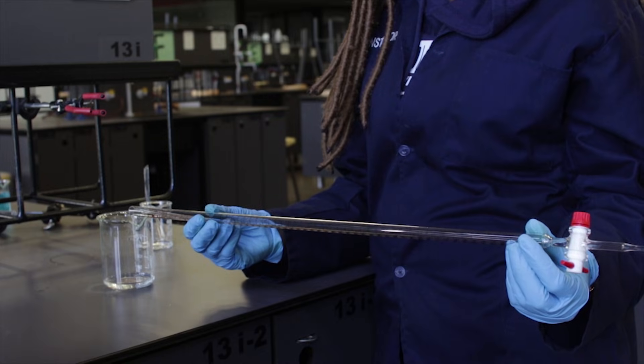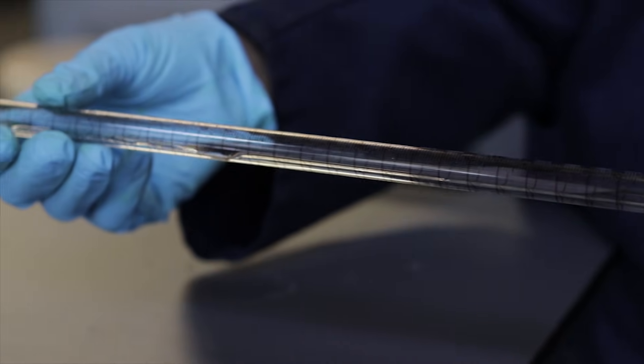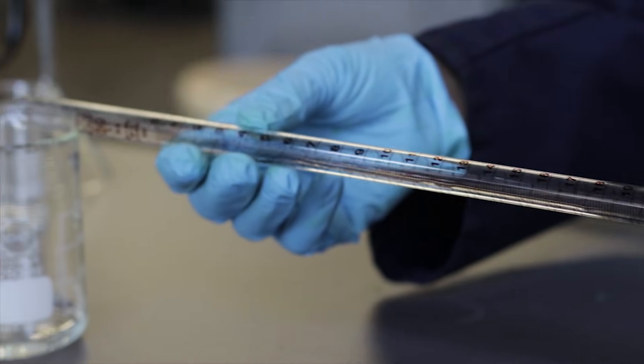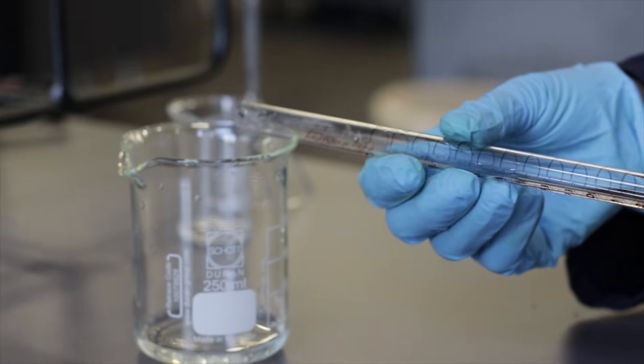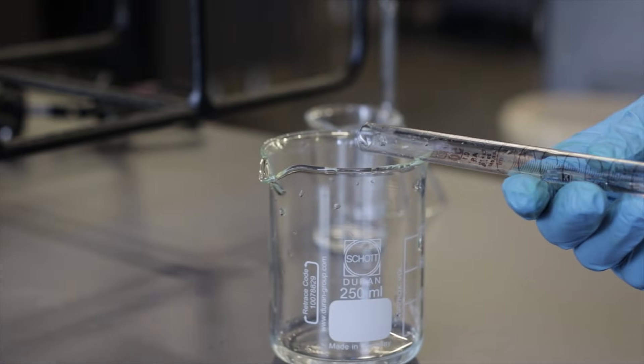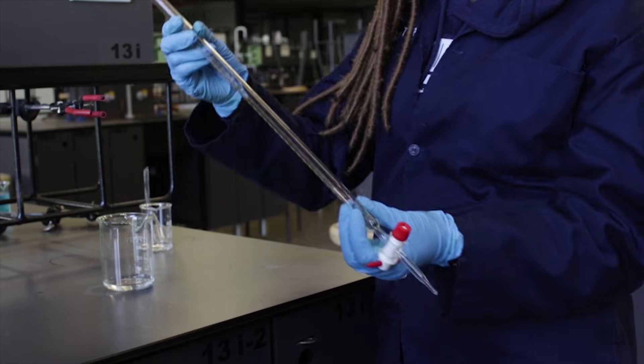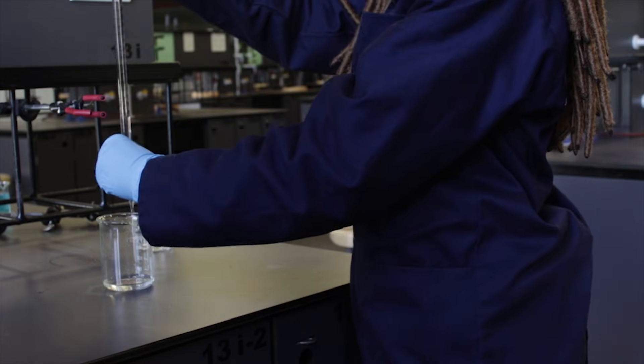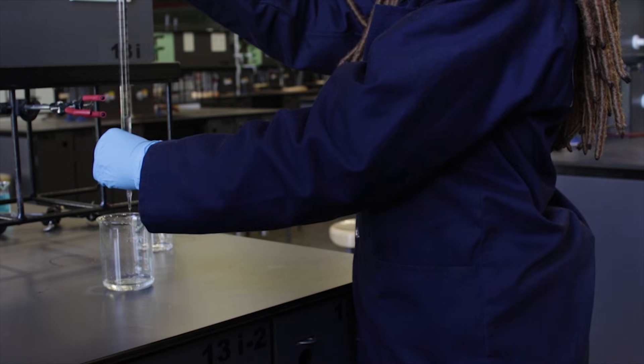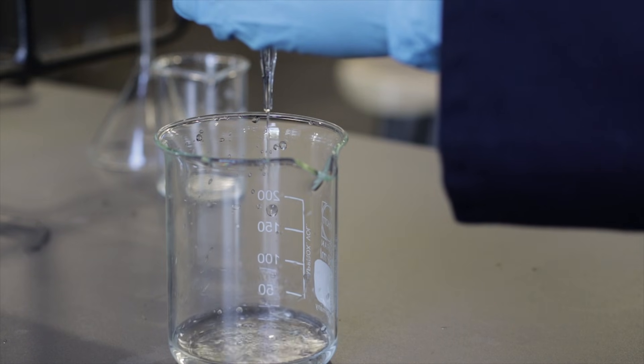The burette is then rotated to allow the solution to flow over the whole inside surface of the burette and the beaker is there to capture any solution that spills out of the open top end of the burette. The solution is then drained through the tap and this procedure is repeated an additional two more times.